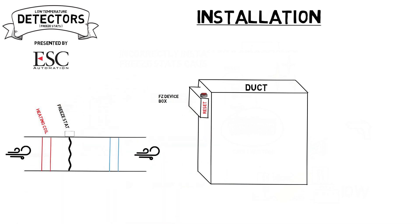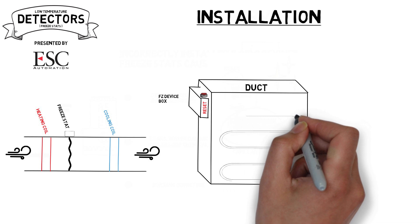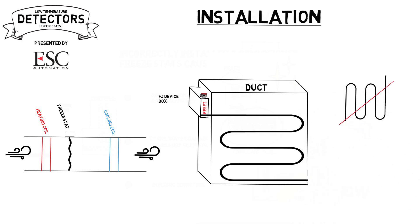This tube is mounted by extending it back and forth across the back face of the heating coil in a zigzag horizontal serpentine pattern. Copper or plastic clips should be used to install the device and prevent it from vibrating.